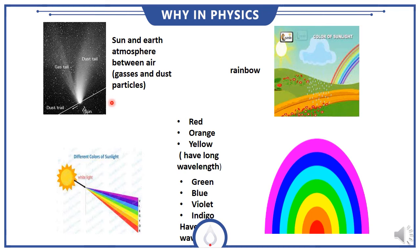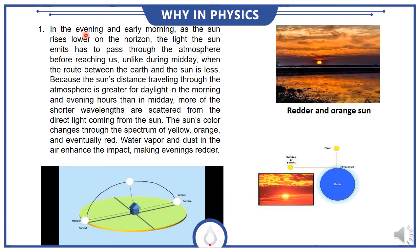it encounters dust particles and gases. In the evening and early morning, as the sun sits lower on the horizon, the light has to pass through more atmosphere before reaching us, unlike during midday when the route between the earth and the sun is shorter.